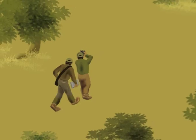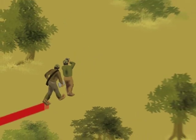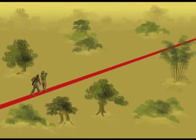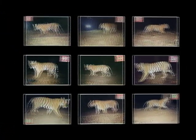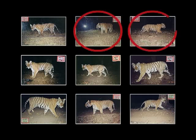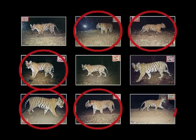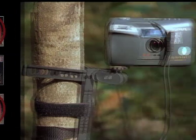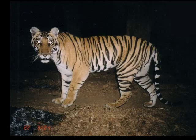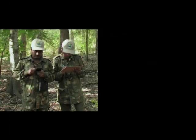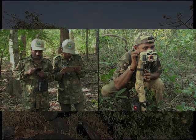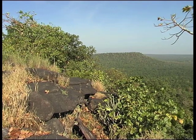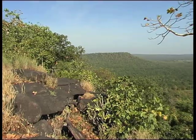In the previous chapters, we saw how line transect sampling is used to estimate prey animal numbers from direct visual sightings. We also saw how tiger numbers can be estimated through capture-recapture sampling using camera traps. These intensive sampling methods work well in areas that are relatively small, such as a single national park or reserve.